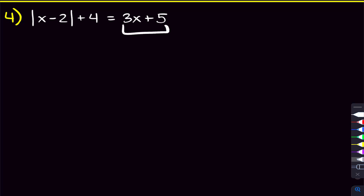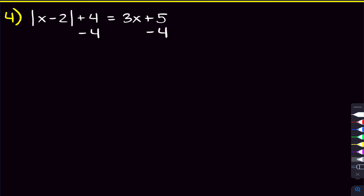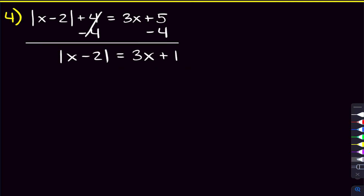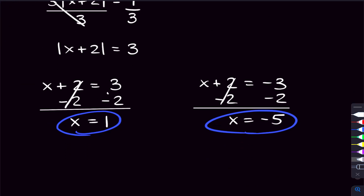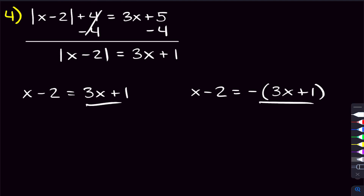Now, what happens if there are x's on the right-hand side? We still start the same way: get the absolute value by itself on the left. We subtract 4 on both sides to get the absolute value of x minus 2 equals 3x plus 5 minus 4, which is 3x plus 1. Then it's the same situation as before: x minus 2 could equal 3x plus 1, or it could equal the negative version of 3x plus 1.